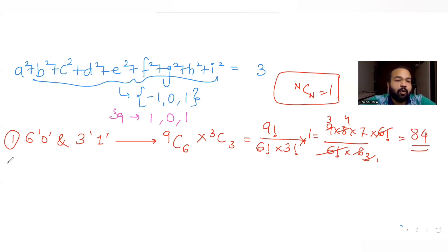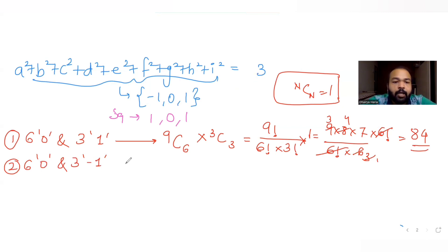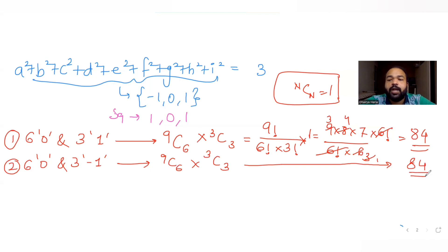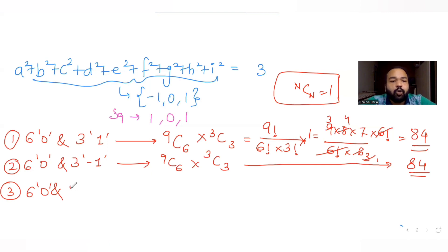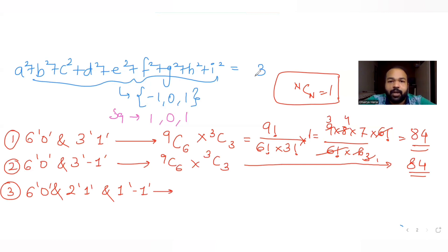Second combination: six zeros and the remaining three are all -1. Since (-1)² = 1, the sum of squares is still 3. This gives the same count — 9C6 = 84 possibilities. Third combination: six zeros, two elements are 1, and one element is -1. The squares give 1 + 1 + 1 = 3, so this also satisfies the condition.